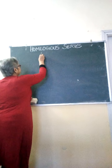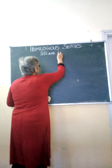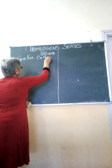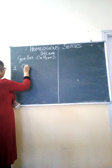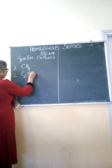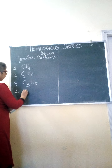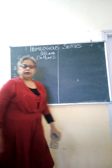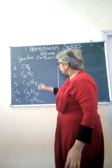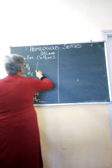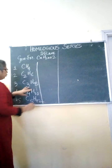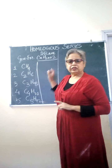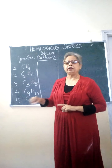Writing the alkane homologous series with general formula CₙH₂ₙ₊₂: the first member is Methane, second is Ethane, third is Propane, fourth is Butane, and fifth is Pentane. By looking at this vertical column of organic compounds, you can easily see that all these compounds can be represented by the general formula CₙH₂ₙ₊₂.